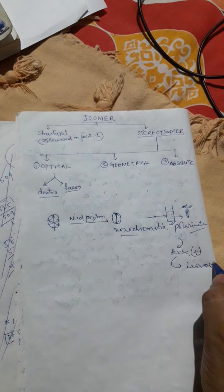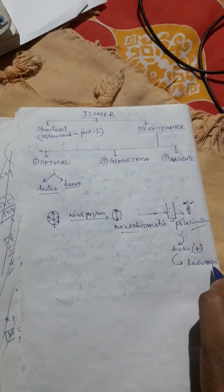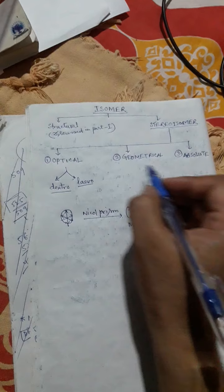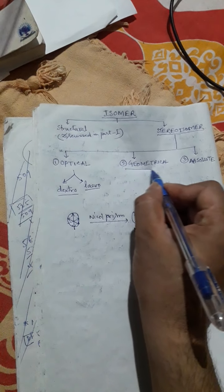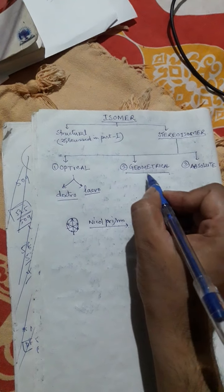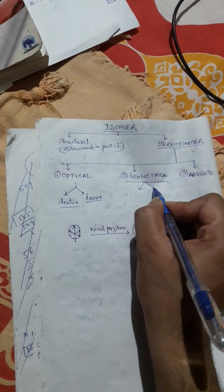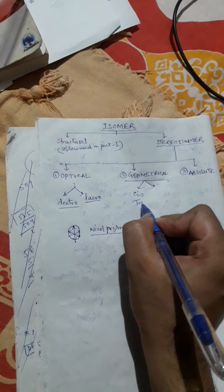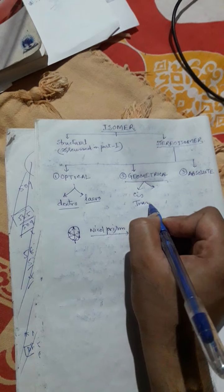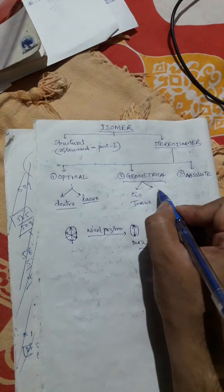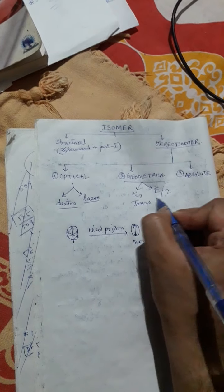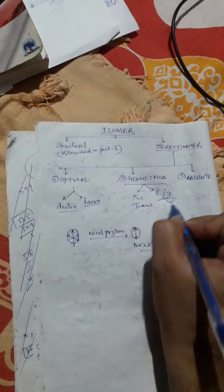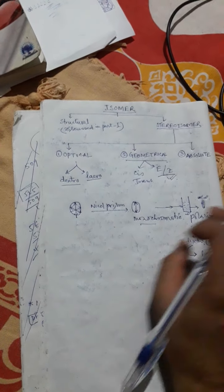Now the next one is geometrical isomerism, which is again of two types: one is cis/trans, and the other one is E and Z — entgegen and zusammen. Let's go through them one by one.